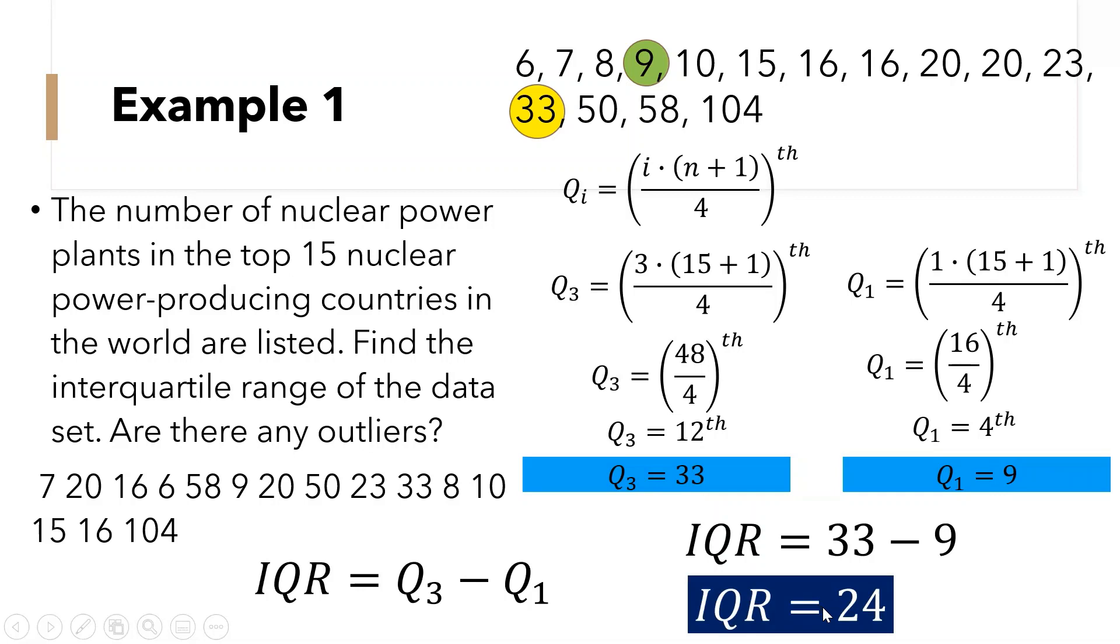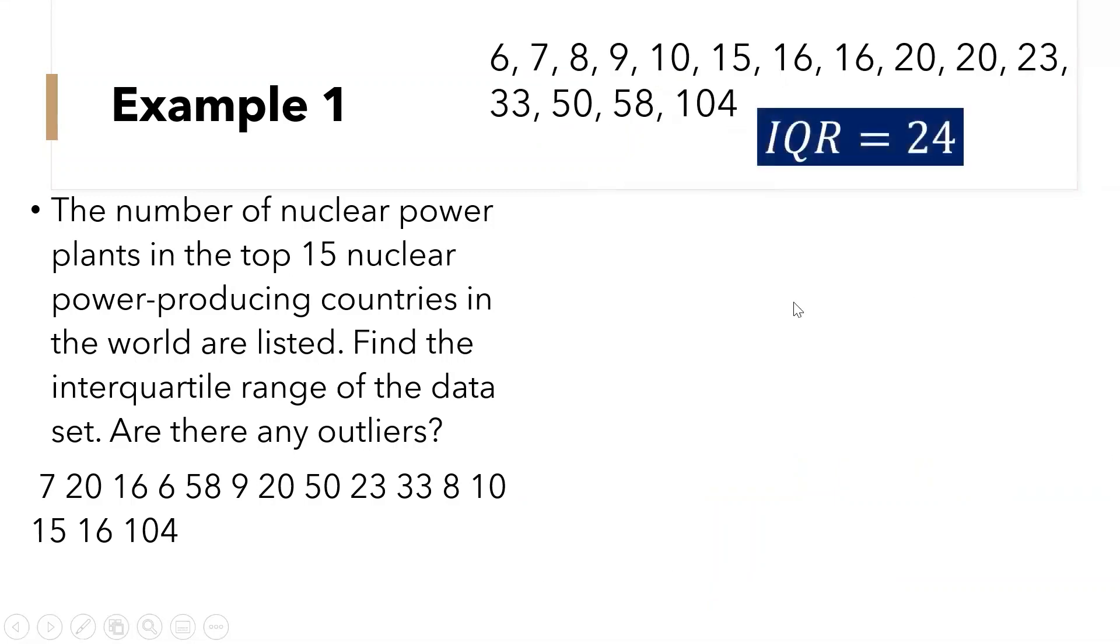Now let us find whether there are any outliers. Now again, so take note that our IQR is 24. To find the outliers, we need to multiply the IQR by 1.5. That is now 1.5 times 24. That is equal to 36.